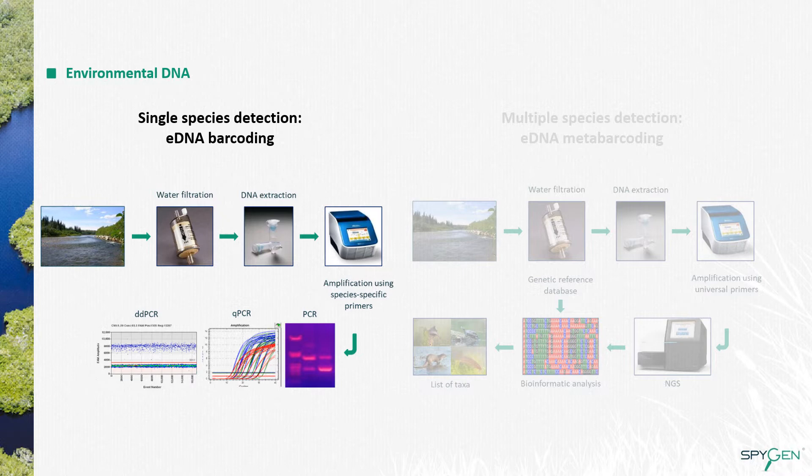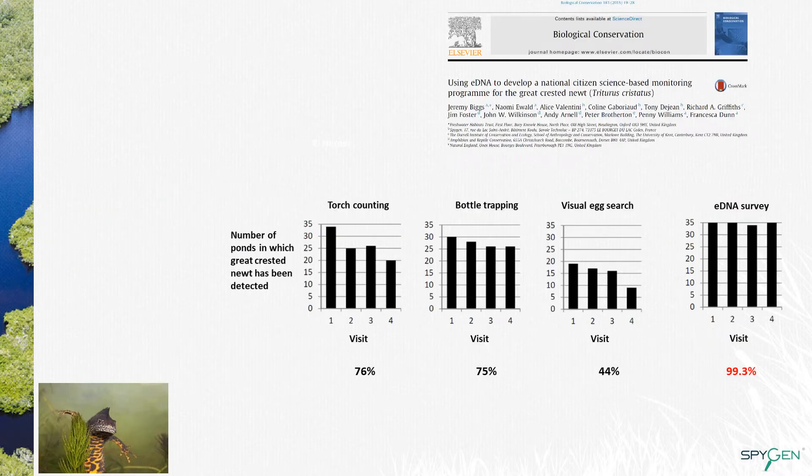In some cases where we analyze a species with a high amount of DNA in the environment, it is possible to determine the quantity of this DNA using a qPCR or a digital droplet PCR. This approach was used, for example, for the detection of Great Crested Newt in the United Kingdom, where this species is protected.